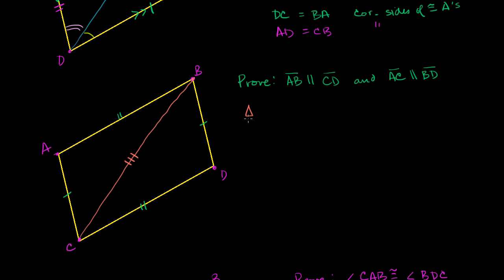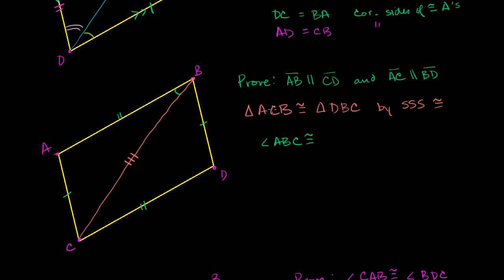So we know that triangle ACB is congruent to triangle DBC by side-side-side congruency. That tells us that all of the corresponding angles are going to be congruent. For example, angle ABC is going to be congruent to angle DCB — corresponding angles of congruent triangles.